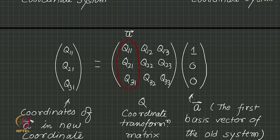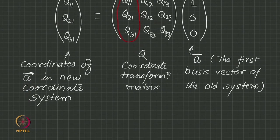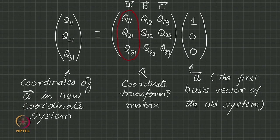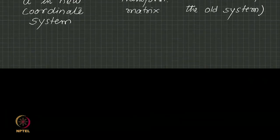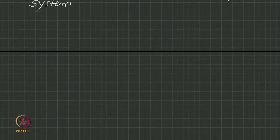Notice what you have got: you have got just the first column of this matrix, which means the first column of the coordinate transformation matrix is nothing but the first old vector A written in the new coordinate system. A written in the old coordinate system is (1, 0, 0); A written in the new coordinate system will be (Q₁₁, Q₂₁, Q₃₁). Similarly, if you multiply by (0, 1, 0) you get the second column, which represents B, and the third column will represent C. You have already found the algorithm for setting up the coordinate transformation matrix — it is as simple as that.